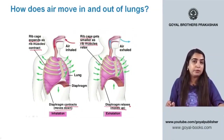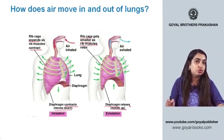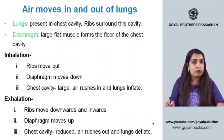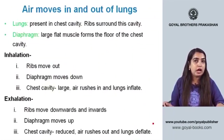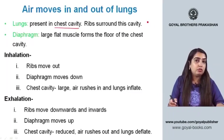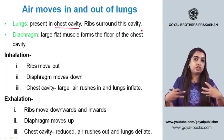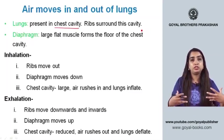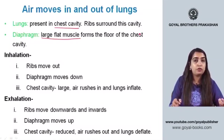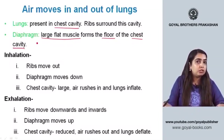During exhalation, the rib cage becomes smaller, the rib muscles relax, and the diaphragm relaxes and moves up, and air is exhaled out through the nose. The lungs are present in the chest cavity, surrounded by the rib cage for protection. The diaphragm is a large flat muscle forming the floor of the chest cavity.